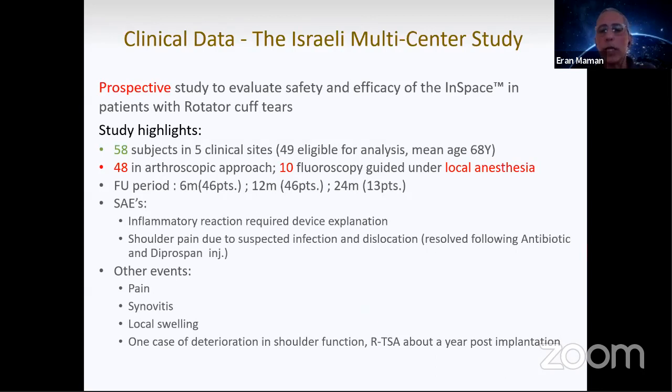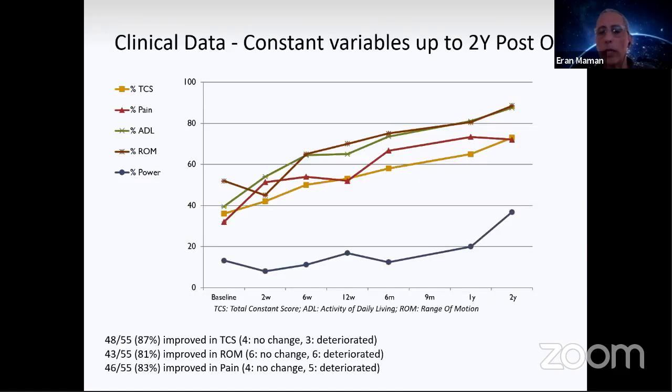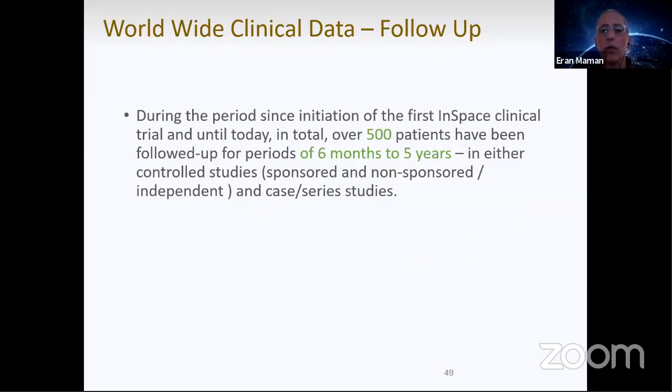Another study we did in Israel, a multicenter study with 58 patients, 10 of whom the balloon was put under local anesthesia under fluoroscopy. The rest of the patients, 48, we did it arthroscopically. The results were quite similar to the one from Slovenia. We started at baseline around 36 and at two years follow-up we had 73 points of constant score. The variables are quite the same as before - pain, ADL, and range of motion improved nicely, the power not so much.